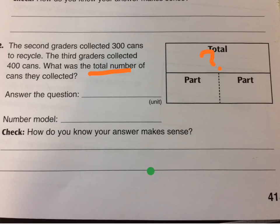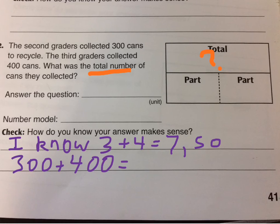And again, just how did you get it, or how do you know? You could write something like, I know 3 plus 4 equals 7, so 300 plus 400 equals, what does it equal? Just how do you know the addition? Just explain how you know your addition here.